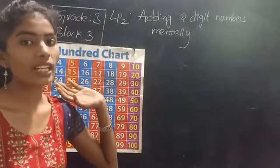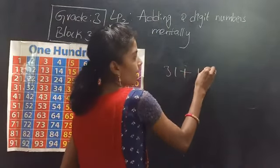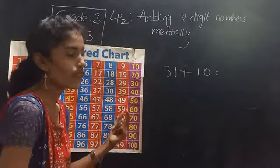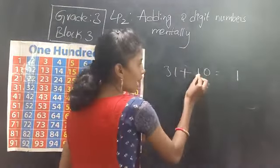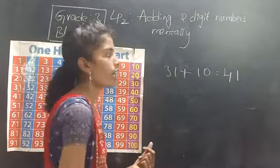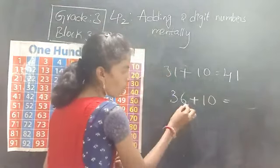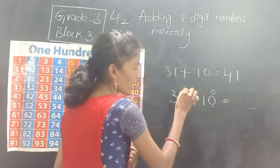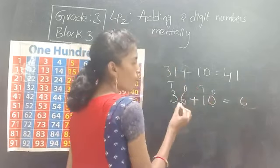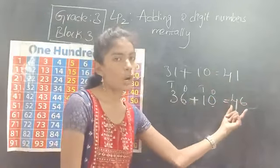So in LP1 we learned adding 10s mentally. For example, 31 plus 10. There are 2 steps to add the numbers: 1s with 1s and 10s with 10s. So 1 plus 0 is 1 and 3 plus 1 is 4. So 31 plus 10 is 41. And 36 plus 10: 1s with 1s — 6 plus 0 is 6, and 10s with 10s — 3 plus 1 is 4. So 36 plus 10 is 46.